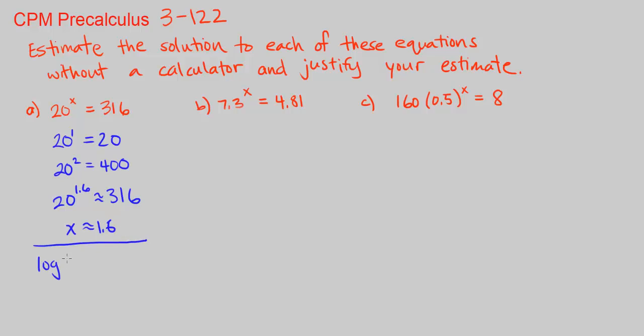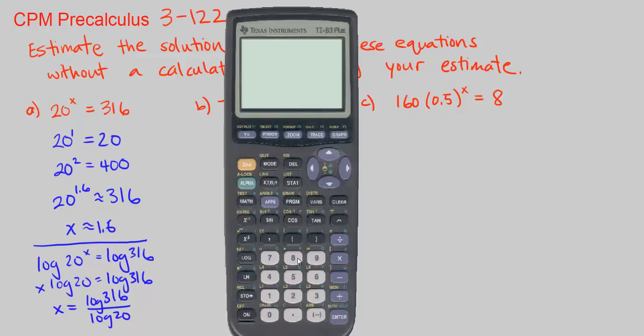We just apply log to both sides. We use the power log law to bring this as a coefficient in front. And we divide both sides by log of 20. We get x equals log of 316 divided by log of 20. We can plug this into our calculator. Log of 316, close parenthesis. Let me delete the 8.